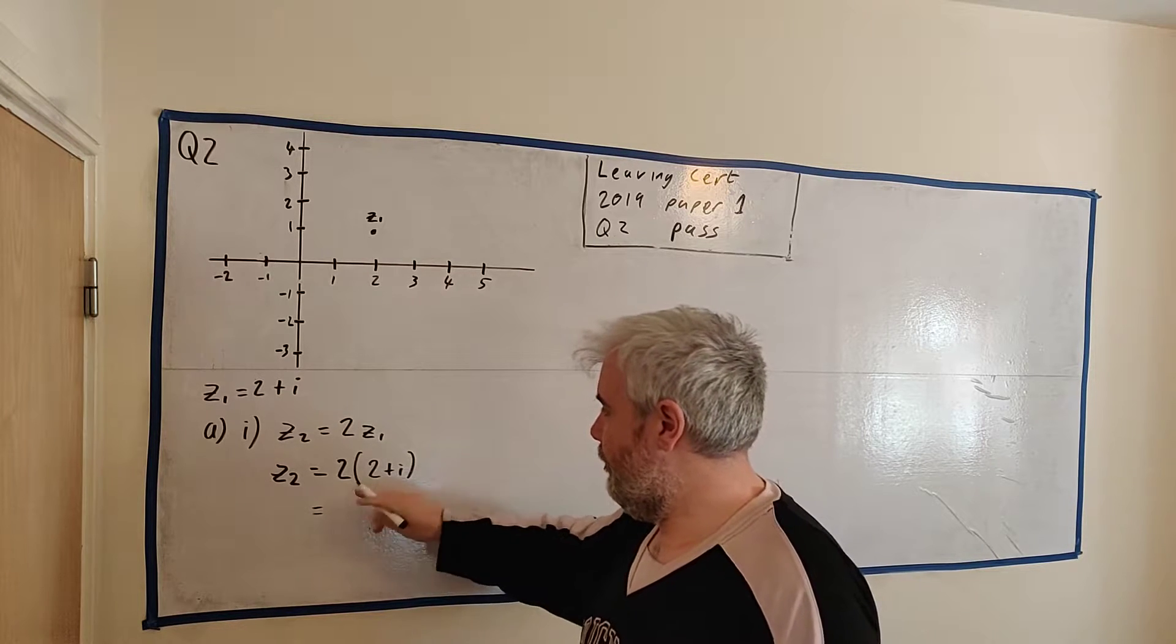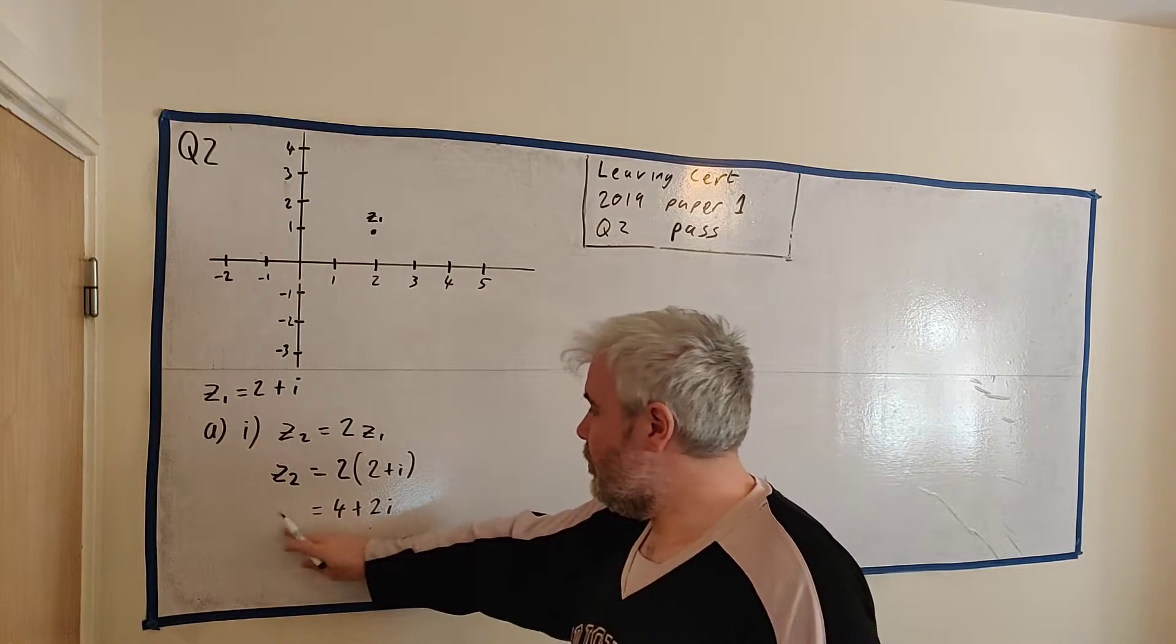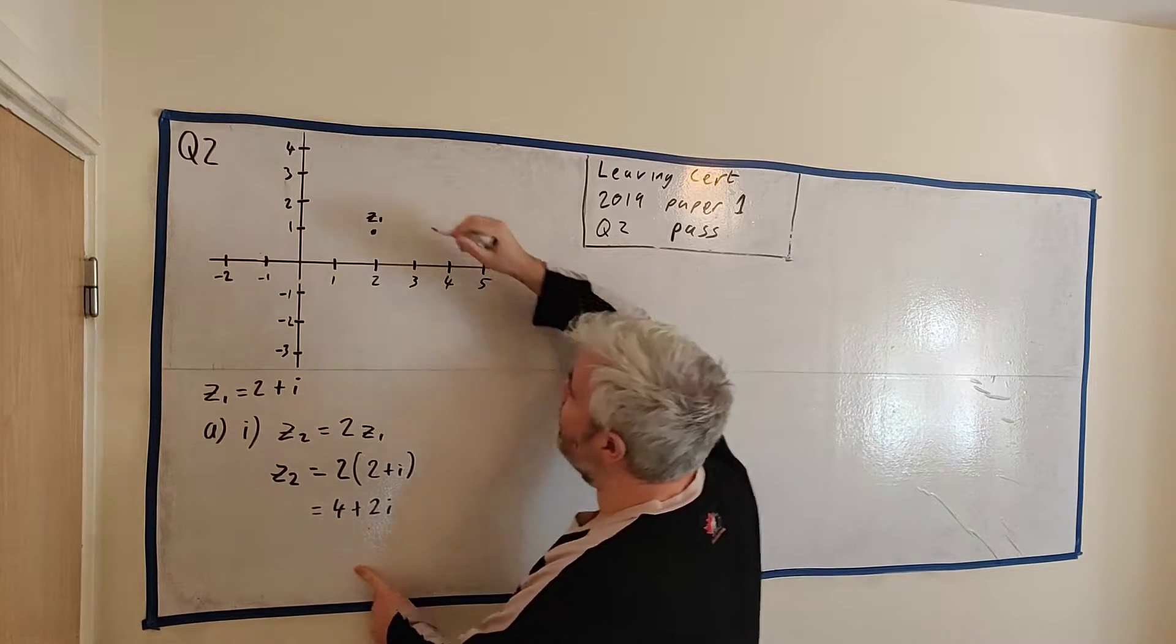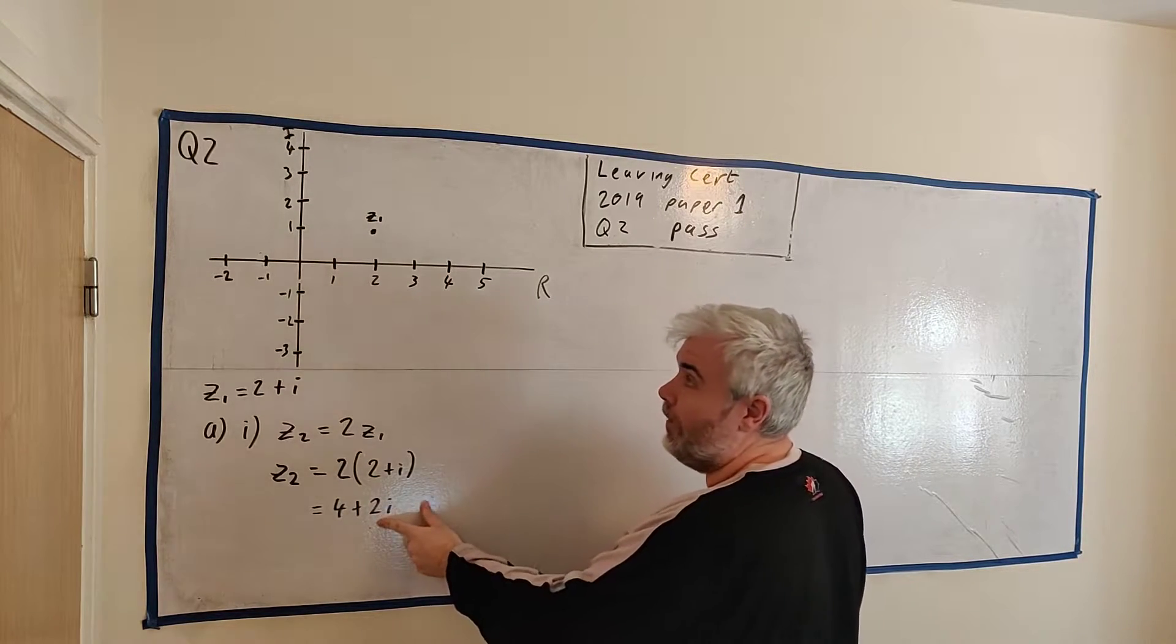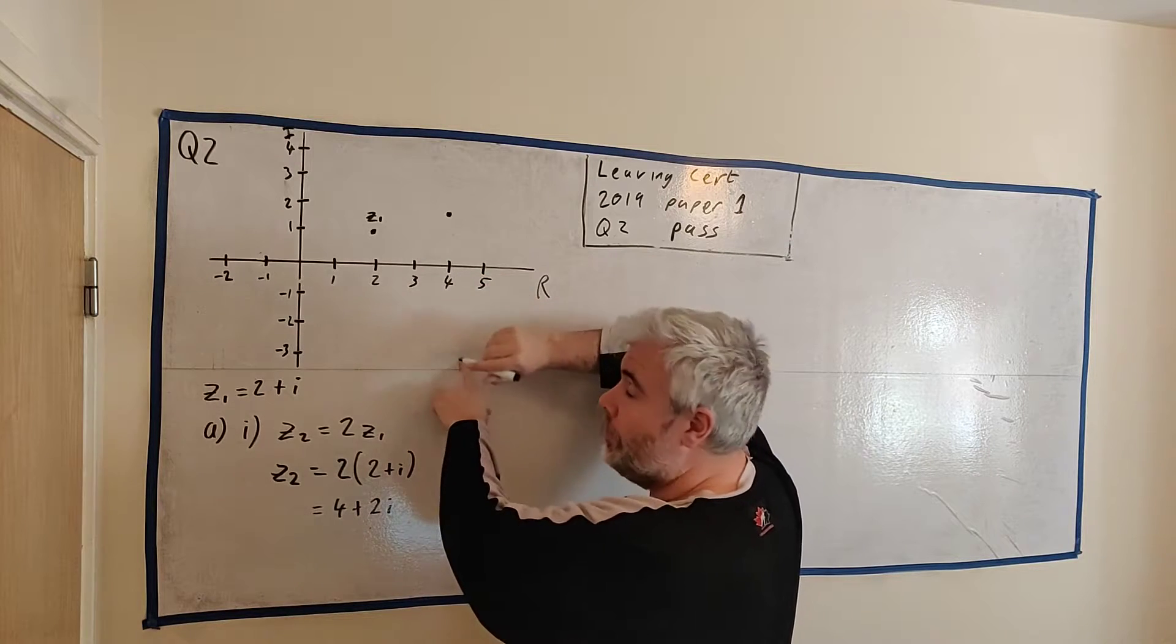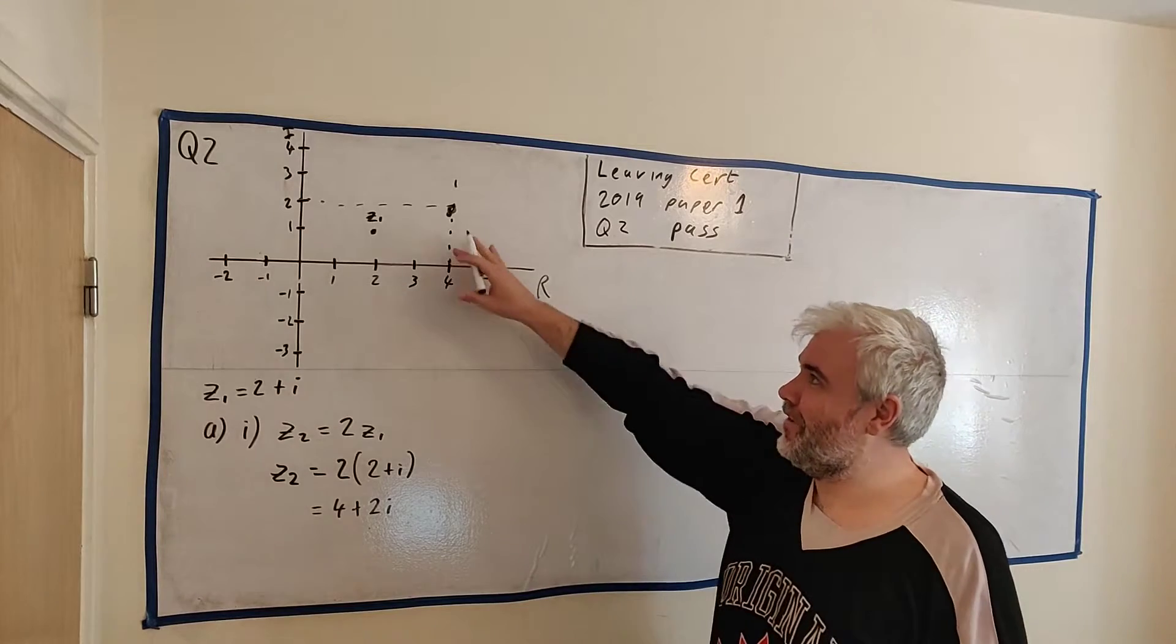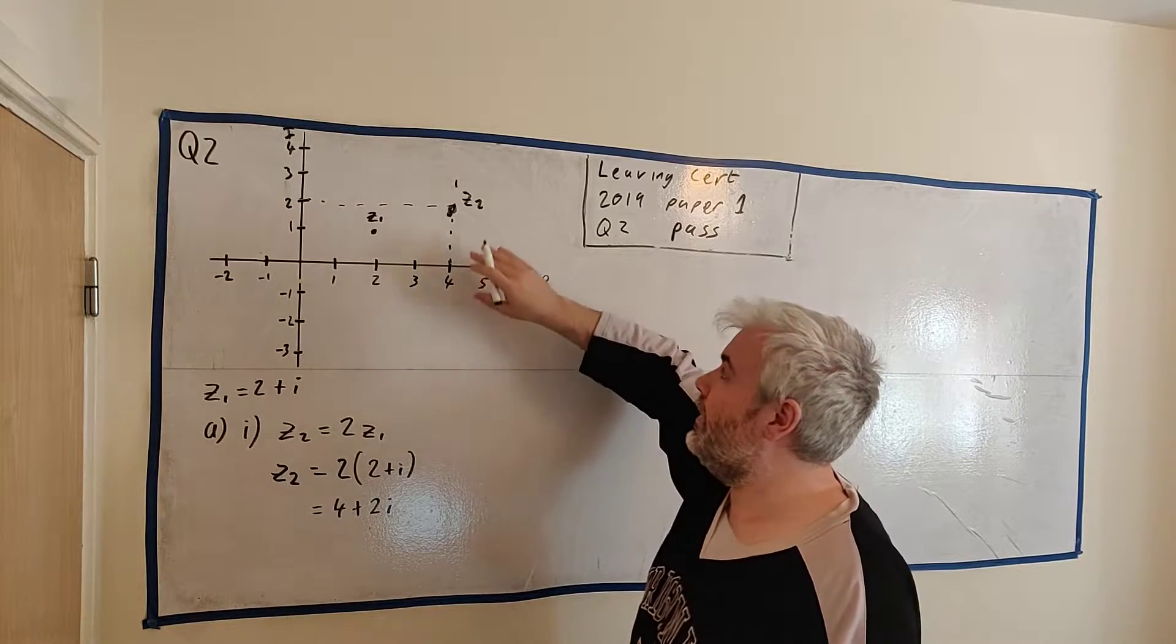We know Z1 is equal to 2 plus i, so where I see Z1 I fill this in. Then I just multiply this out: 2 times 2 is 4, 2 times i is 2i, so Z2 is equal to 4 plus 2i. That's the answer except we just need to draw it. We go to the real part 4 on the real axis, and the imaginary part plus 2, and where they meet—about here. I recommend you use a ruler with a pencil to get a rough line and see where they meet. Then just put in Z2 to help the examiner.